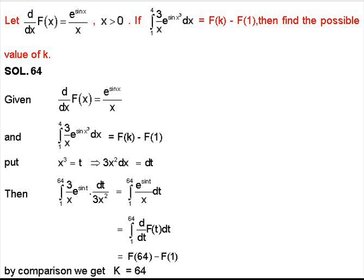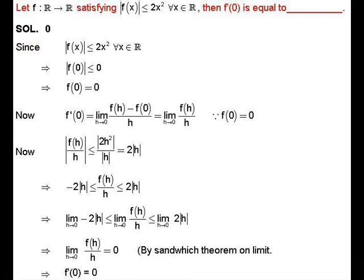Put x³ = t, then we get 3x² dx = dt. Substituting these values into the given integration, the integral becomes ∫₁⁶⁴ (e^(sin t)/t) dt. Replace e^(sin t)/t with f'(t), and comparing both sides we get k = 64.